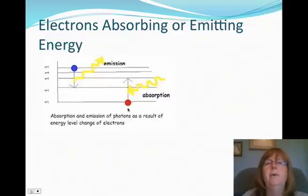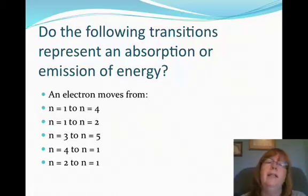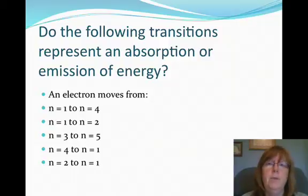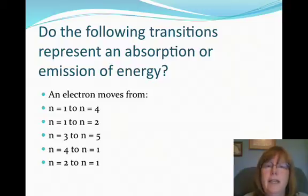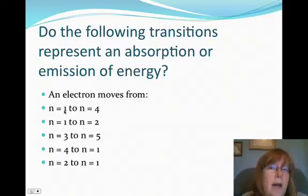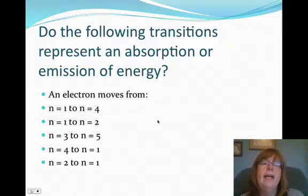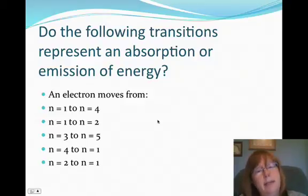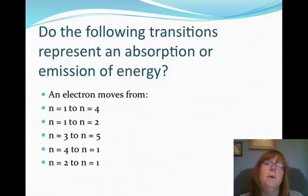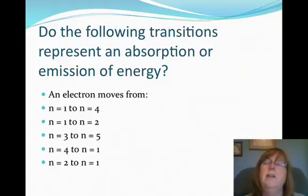So just some words to remember. Let's practice and see if these transitions represent absorption or emission of energy. An electron in n equals 1 going to n equals 4 — is that absorption or emission? If you said absorbed, you are correct. It goes to a higher energy level, so energy had to be absorbed.